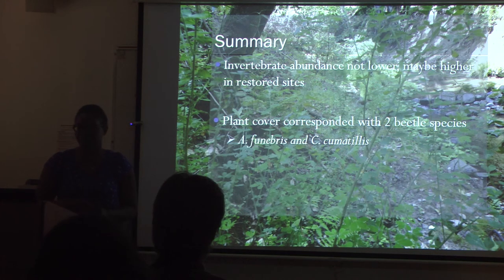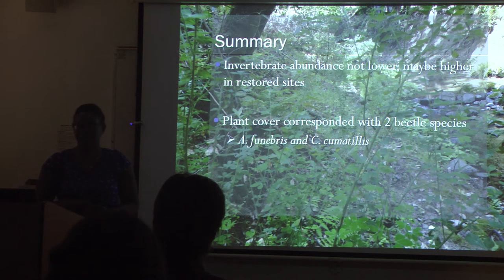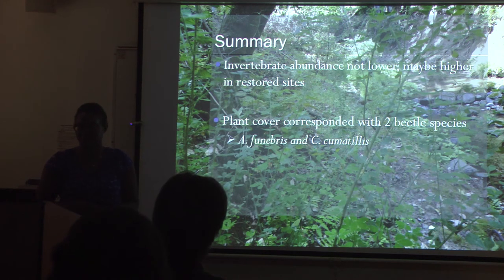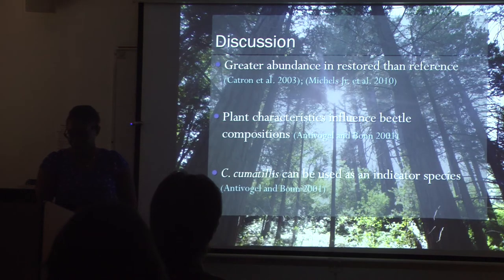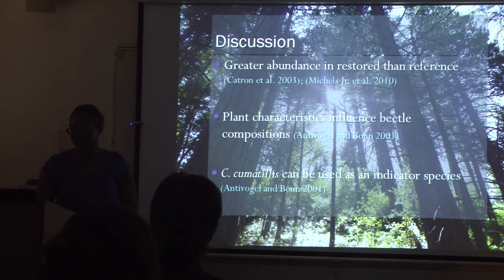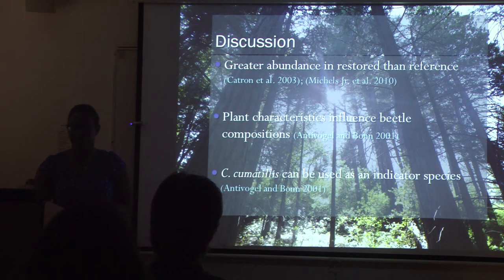Invertebrate abundance was not lower at the restoration sites, and if anything, the trends showed higher total abundances in the restored sites. I also found that plant cover corresponded with at least two beetle species: A. bunivorous and C. cumotillus. The finding that ground beetle abundance was higher in restored compared to reference sites was consistent with findings by Katron et al. in 2003, who evaluated restored river habitat in New Mexico where carabid abundance was greater in managed areas.